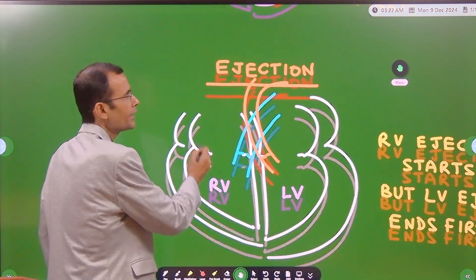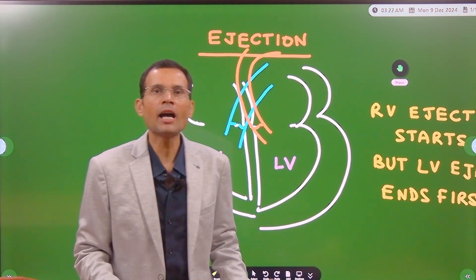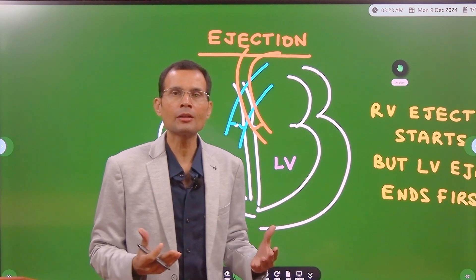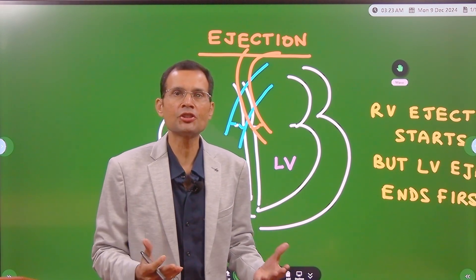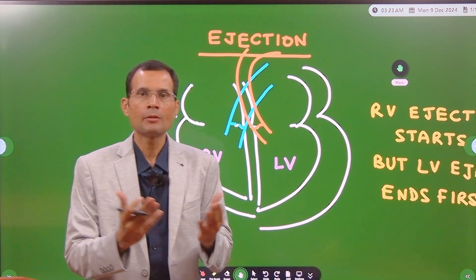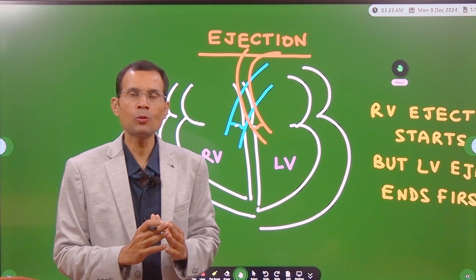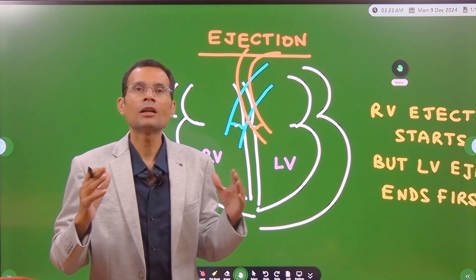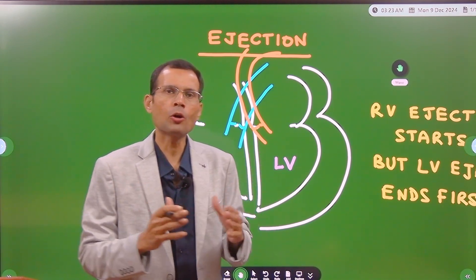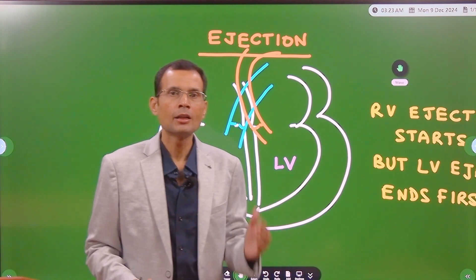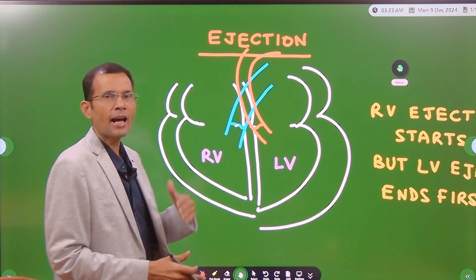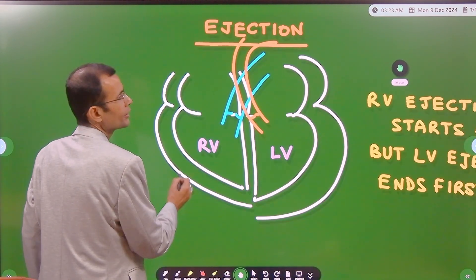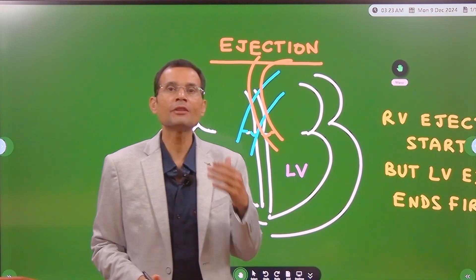That was about the spread of excitation. As a result of that, systole will start. The ventricular musculature is actually a syncytium — both ventricles make up one syncytium — and therefore all the fibers contract together. So when the systolic contraction starts, it starts in both ventricles together. But initially there is isovolumic contraction, followed by the ejection, which requires some understanding of valvular function.